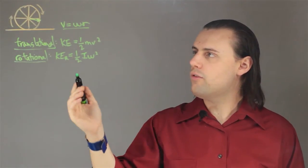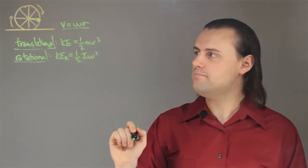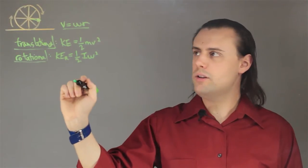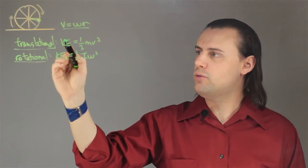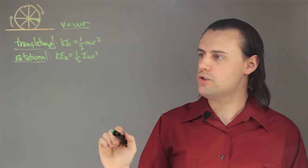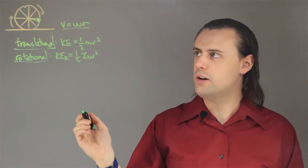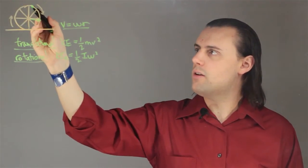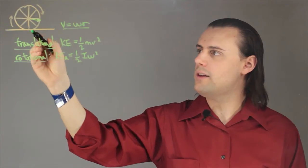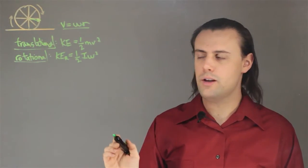So if we're considering rolling without slipping, then we want to add these two energies to get the total kinetic energy, but we also want to understand the relative velocities of the mass at different points along this wheel.